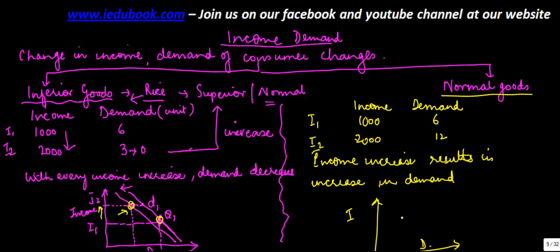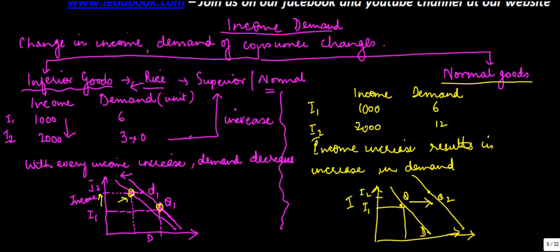So again graphically, this is your income, this is your demand. Let's say at I1 you bought this quantity of goods. As your income increases to I2, the quantity you will buy will increase. So the demand curve moves rightwards. This is known as income demand.